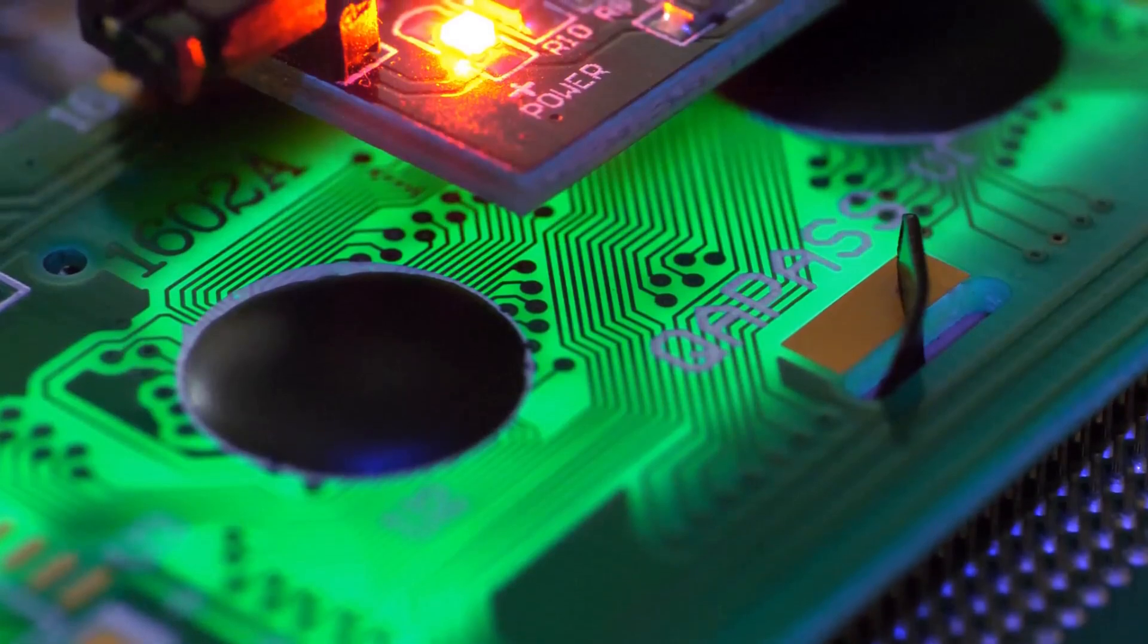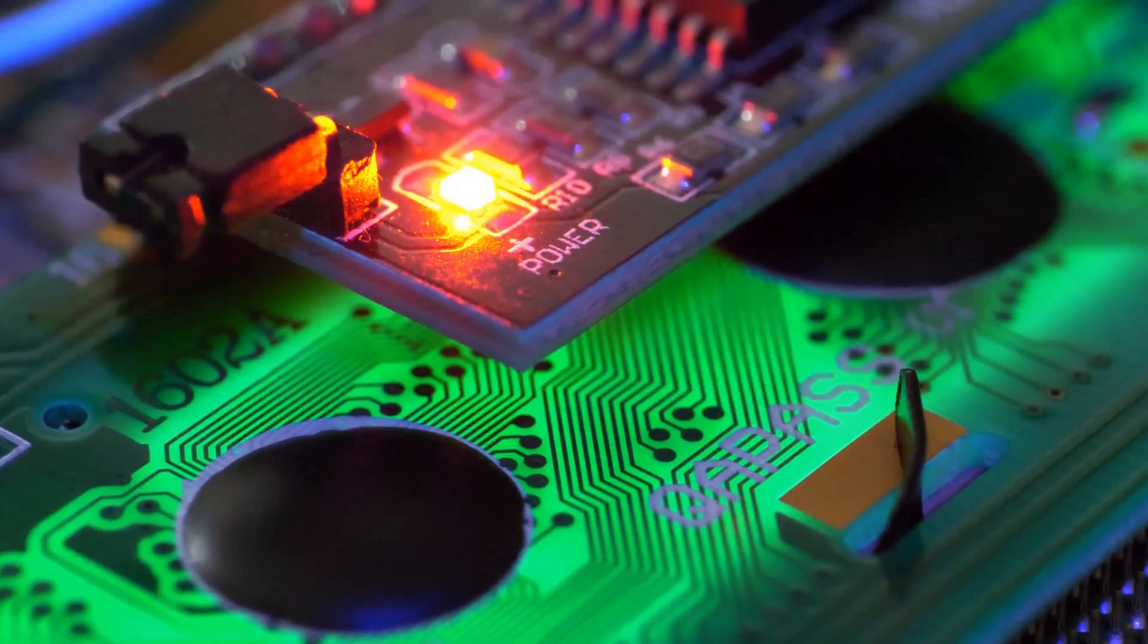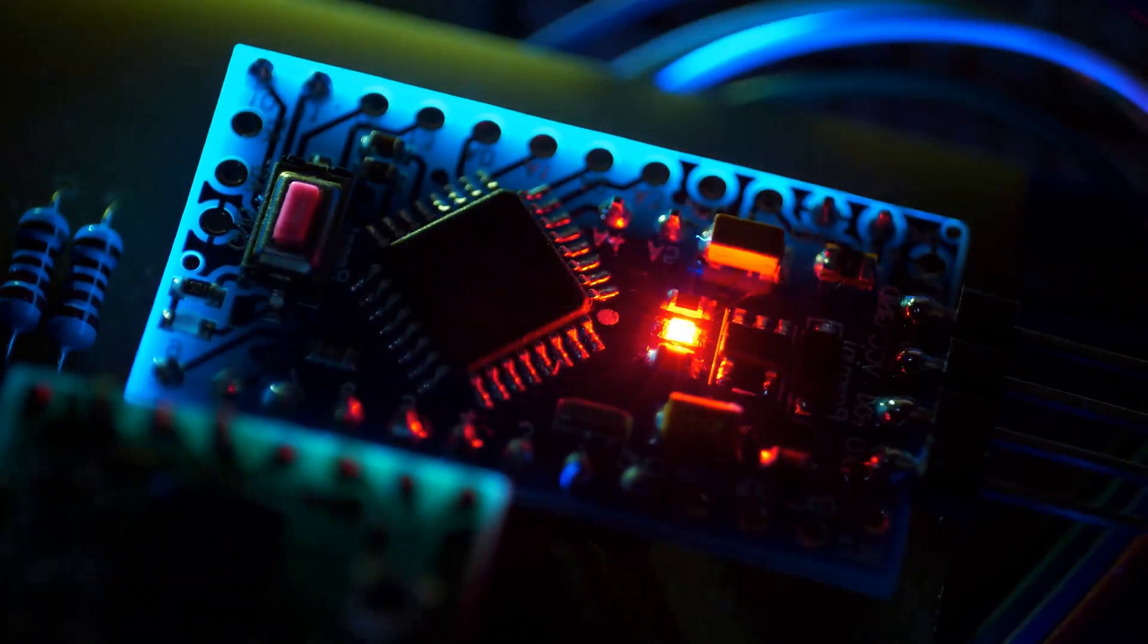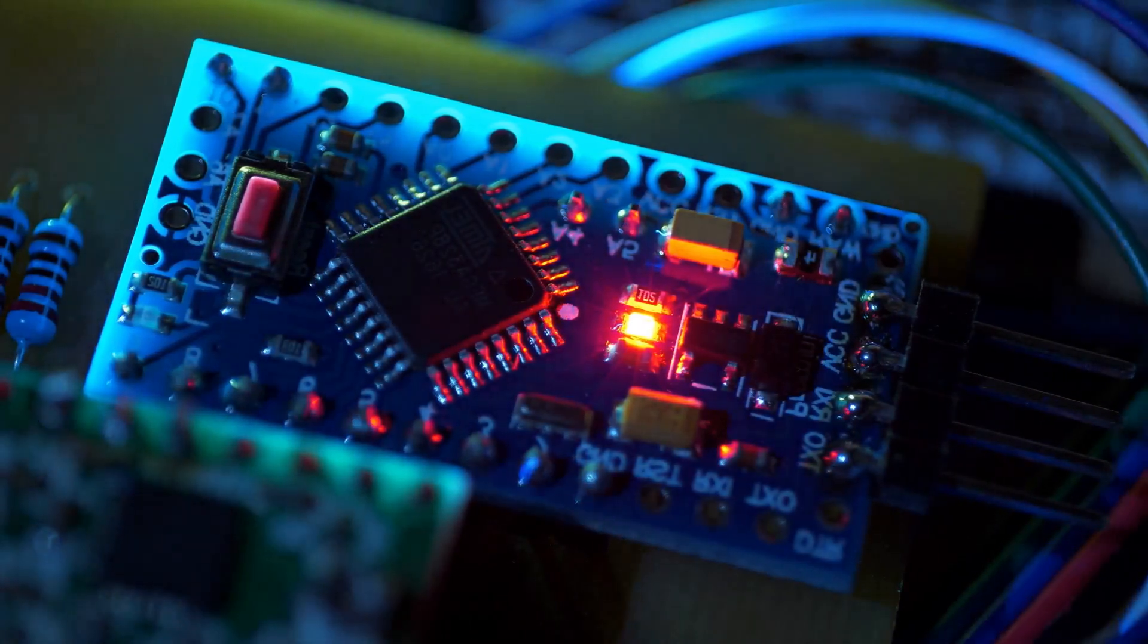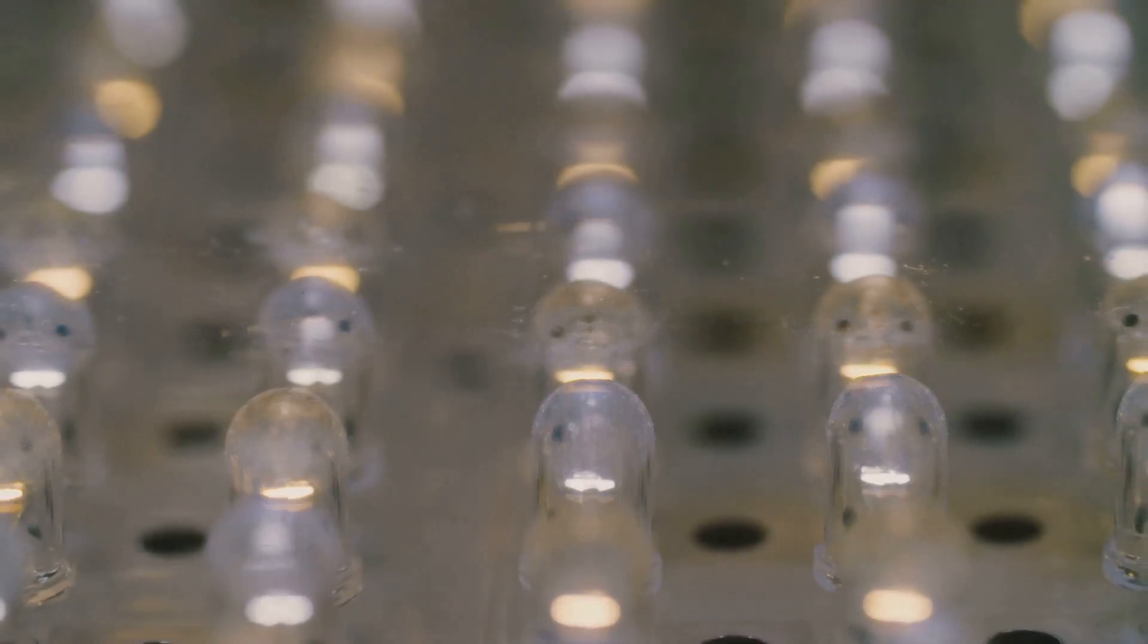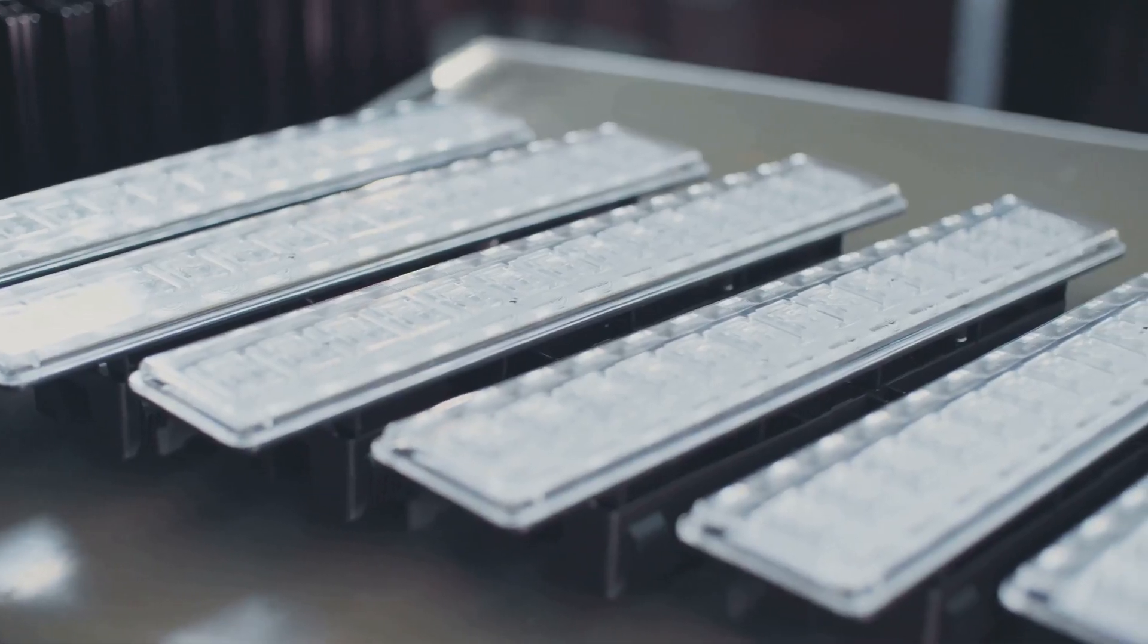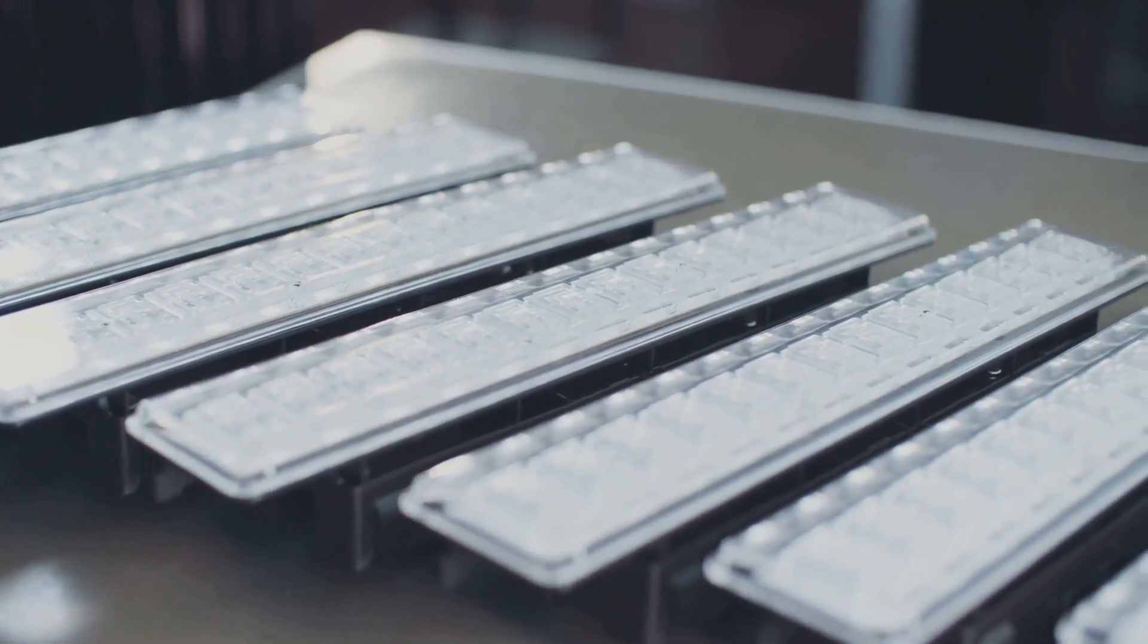Unlike regular diodes, which are primarily concerned with controlling the flow of current, LEDs are designed to emit light when current passes through them. This phenomenon is called electroluminescence. The color of light emitted by an LED depends on the semiconductor material used and the impurities added to it. By carefully selecting the semiconductor material and controlling the doping process, LEDs can be engineered to emit light in a wide range of colors, from visible light to infrared and ultraviolet radiation.